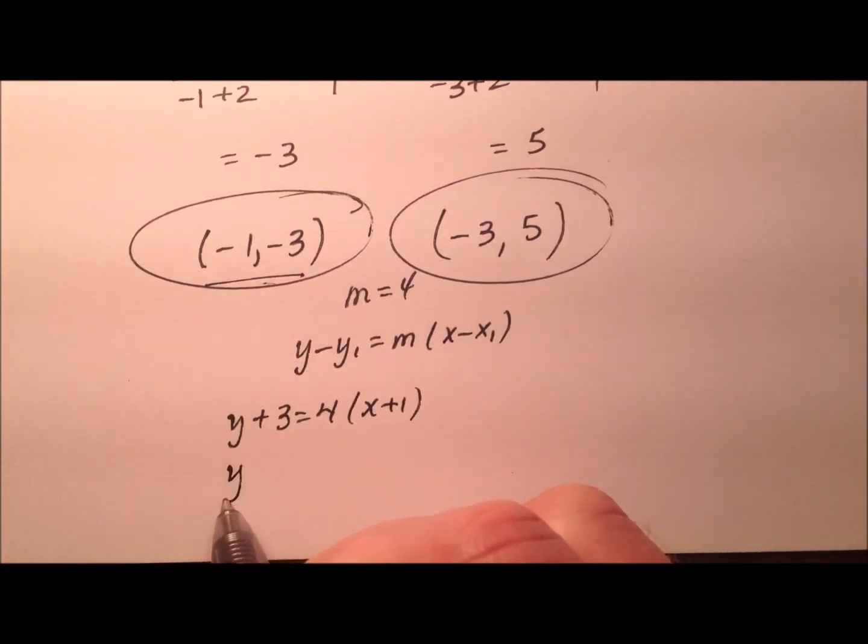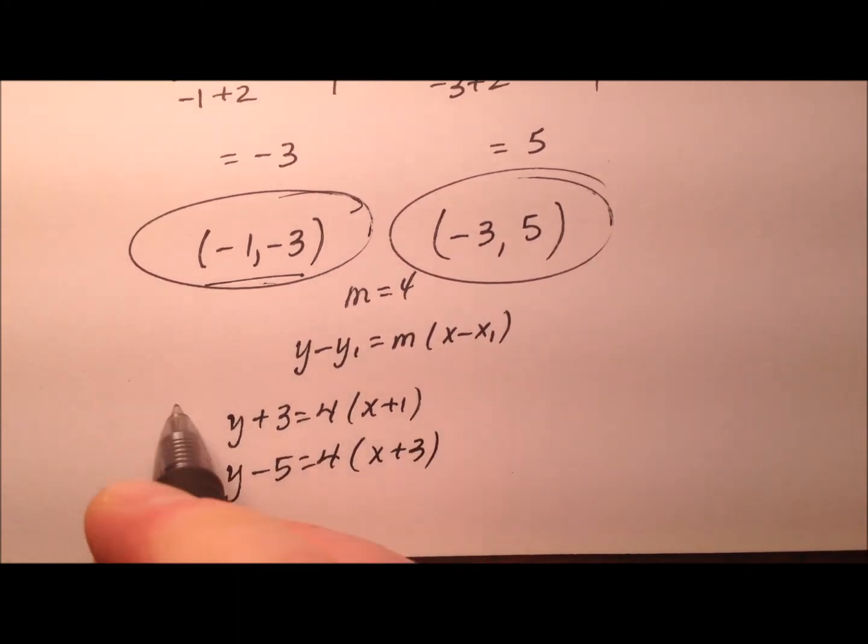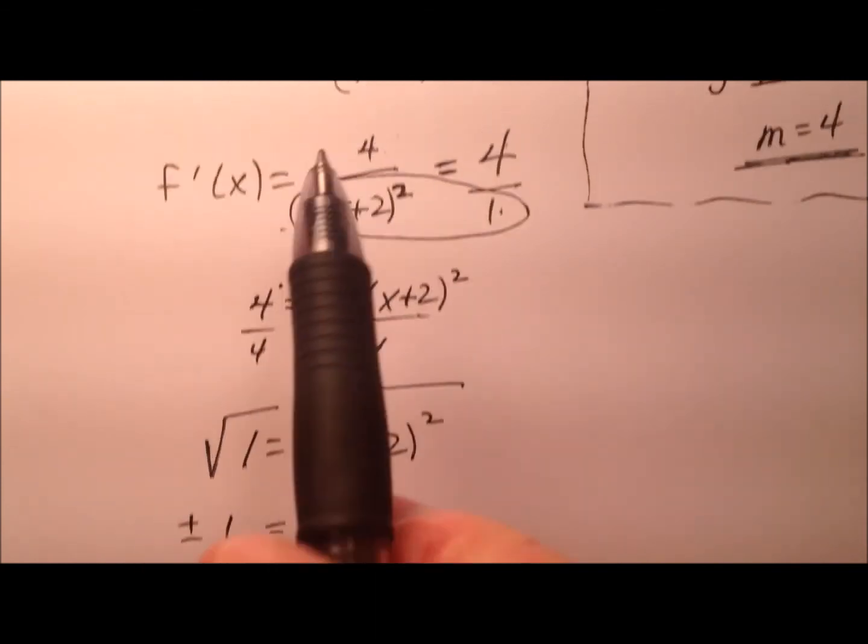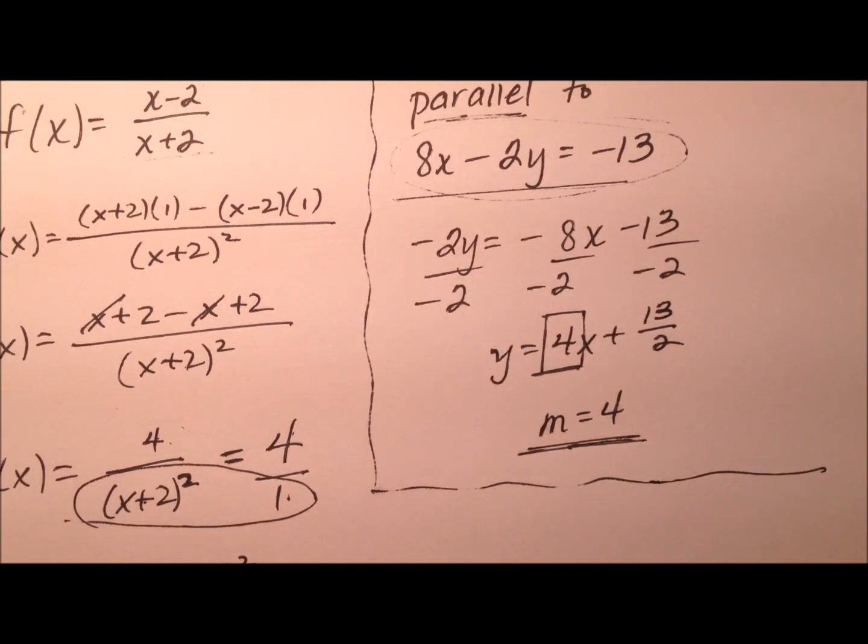And the second one, y minus 5 equals 4 times x plus 3. And these will be the two lines that are tangent to our original function and parallel to this line. And let's go ahead and look at the graph of that.